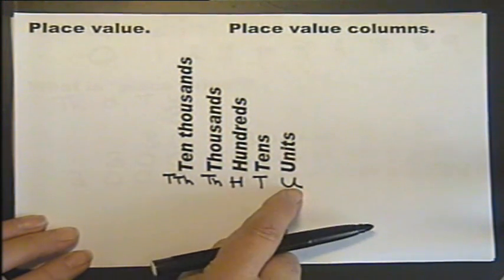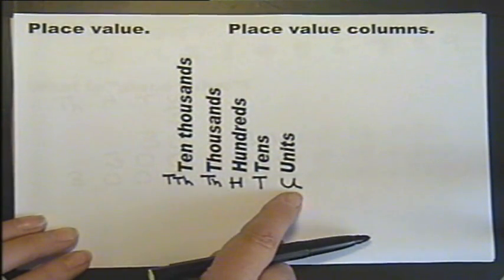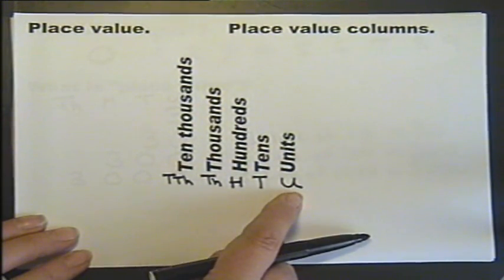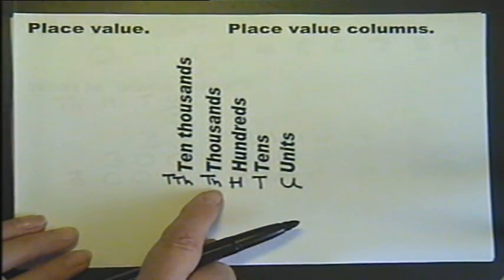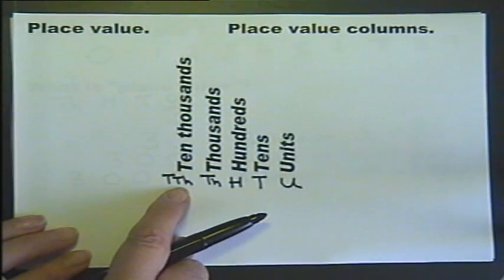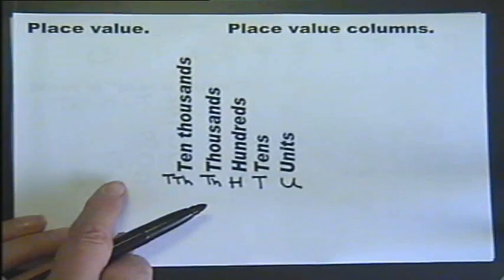So we've got the hundreds, tens, units, the most commonly known ones. We can see our other columns building up: units, tens, hundreds, thousands, tens of thousands, hundreds of thousands, and millions.